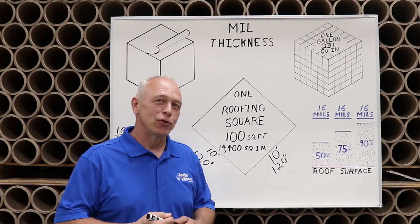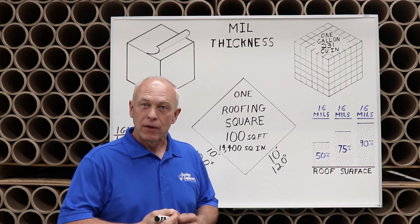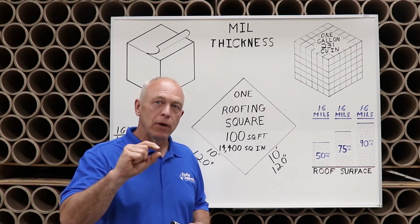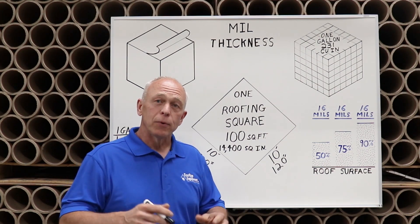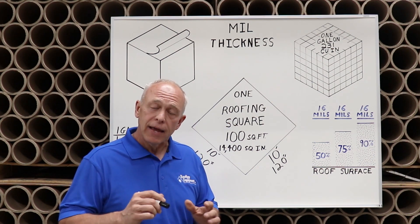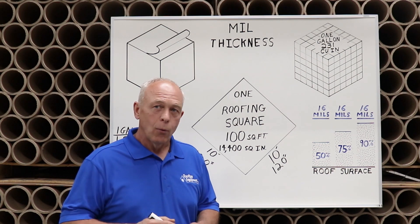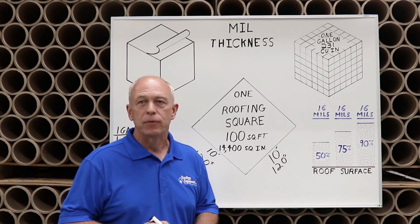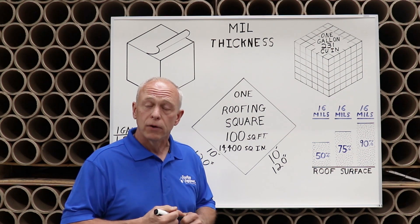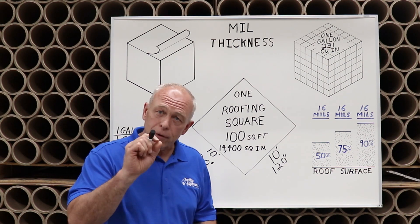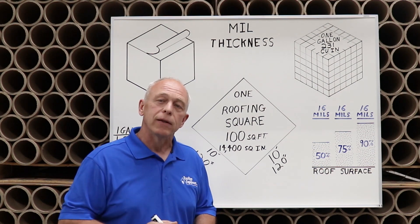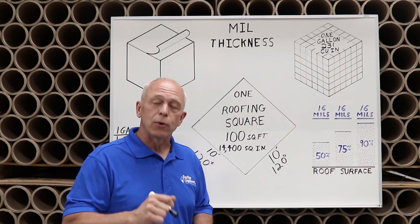We know you want to be confident when you're talking about roof coatings. In order to do this, you need to understand the concept of mill thickness. The problem with terms like mill thickness and gallons per square is that they can seem confusing. We believe it's wrong for such an important concept to be unclear. I know when I first started looking at roof coating, I was confused. But if you just spend a few minutes looking at the details, it'll all begin to make sense. So here's what you need to know.